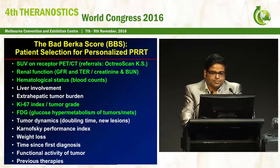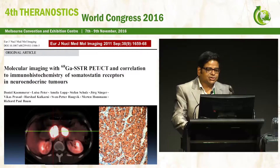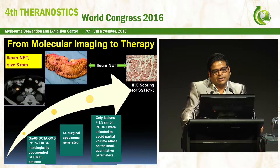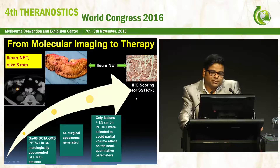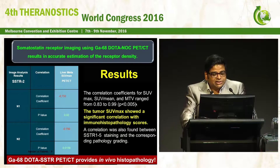Earlier it was debated that SUVs are useless values, but a study by our surgeon Dr. Camera demonstrated a relationship between SUVs on gallium-68 receptor PET CT and receptor expression on immunohistochemistry. We performed preoperative imaging in neuroendocrine tumors — for example, a very small 8 mm neuroendocrine tumor of the ileum — which after resection was examined using immunohistochemistry for all somatostatin receptors 1 to 5. The tumor SUVmax strongly correlated with the immunohistopathology scores.